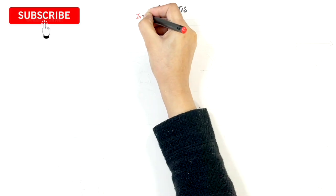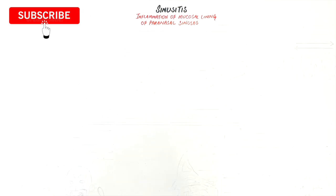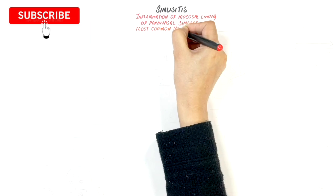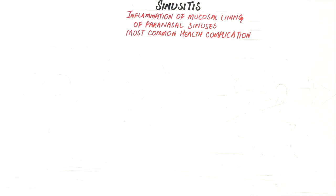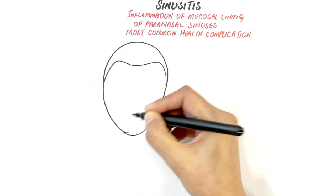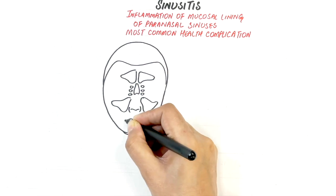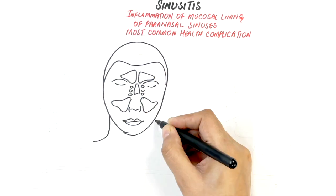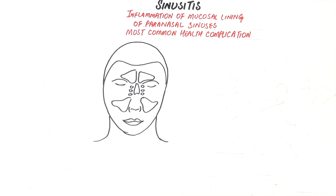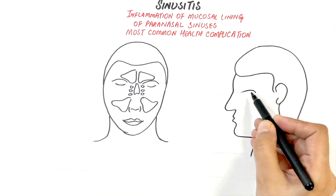Sinusitis is the inflammation of the mucosal tissue lining of the paranasal sinuses, and it's one of the most common health complications among individuals. To understand sinusitis, we must first have some knowledge of sinus anatomy. Paranasal sinuses are hollow cavities within the bones of the skull surrounding the nose, lined by the soft pink tissue called the mucous membrane.